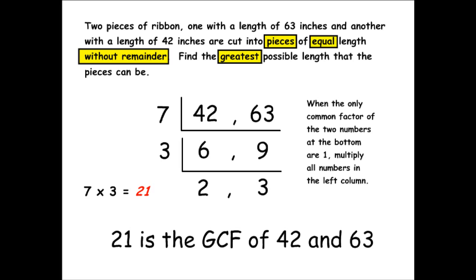So the greatest possible length that we can cut each piece of ribbon into would be 21 inches. With the 63 inch piece of ribbon, we can cut 3 pieces that are 21 inches in length, and with the 42 inch piece of ribbon, we can cut 2 pieces that are exactly 21 inches in length.